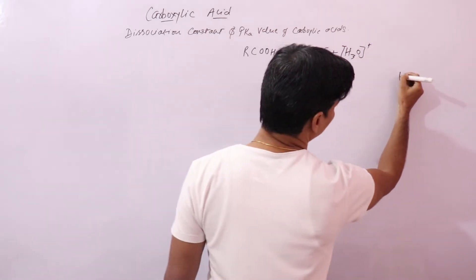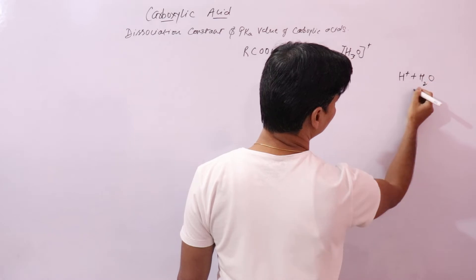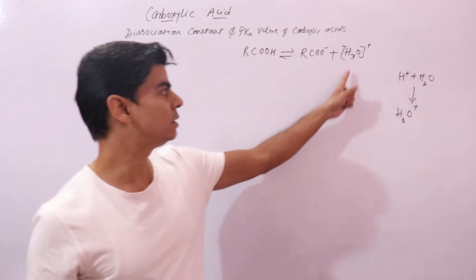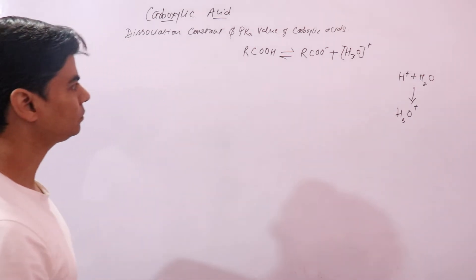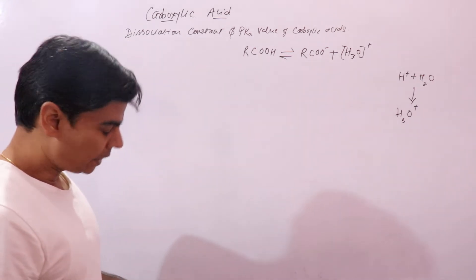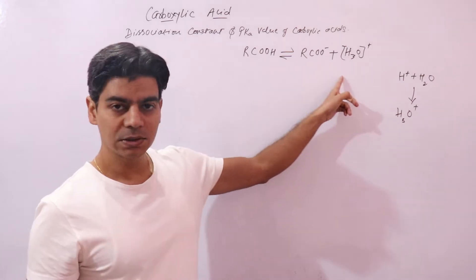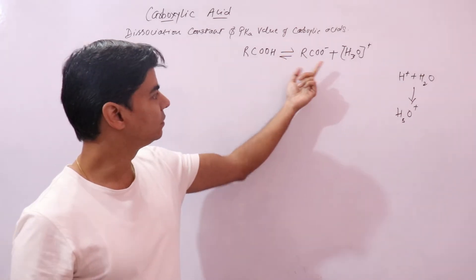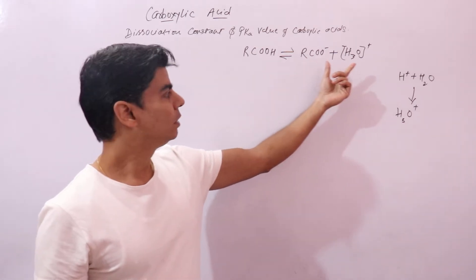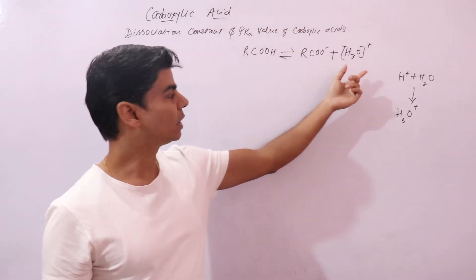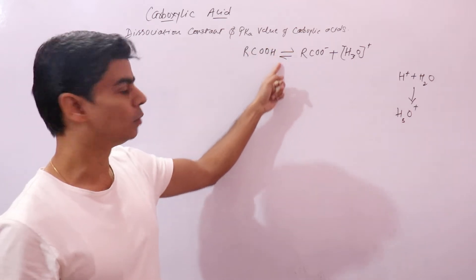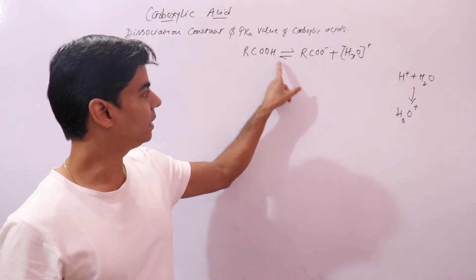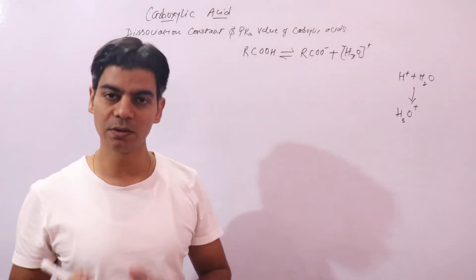Hydrogen ions in solution react with water to give hydronium ions — that is how hydronium ion forms, which is why we write hydronium ion instead of hydrogen ions. Any acid will undergo this reversible reaction. The reverse reaction has the carboxylate ion combining with hydronium ion to give back the unionized molecule, so there exists an equilibrium that the reaction will attain at some point.